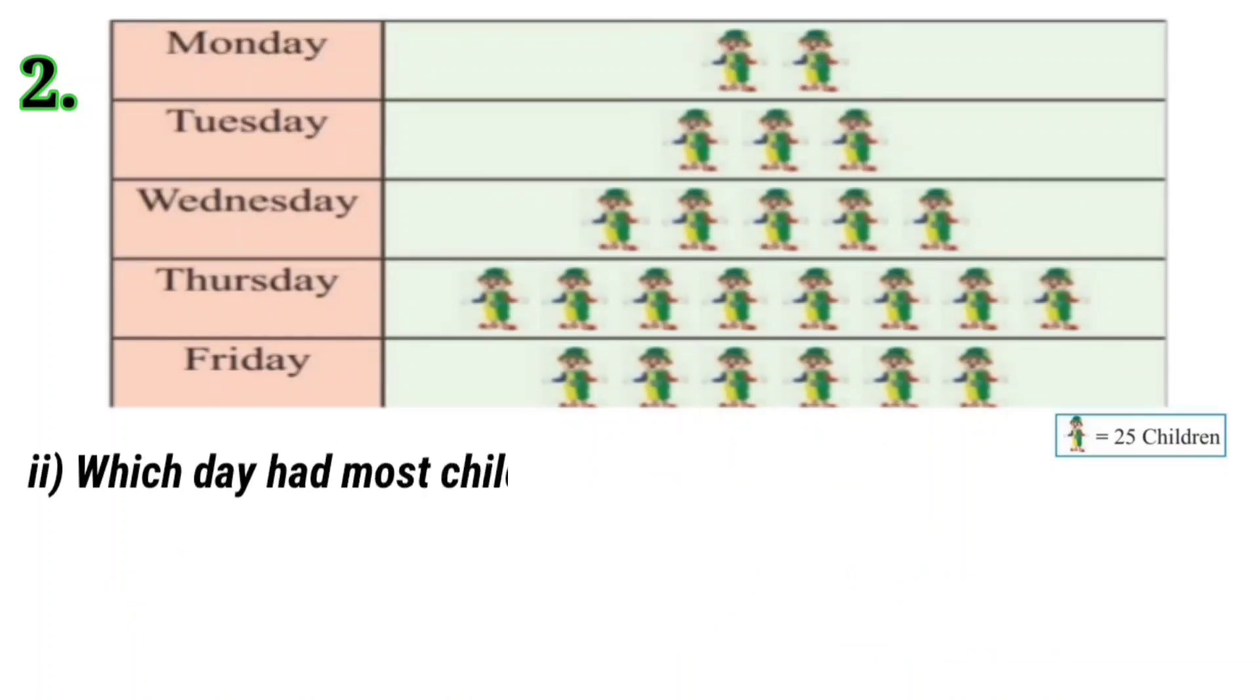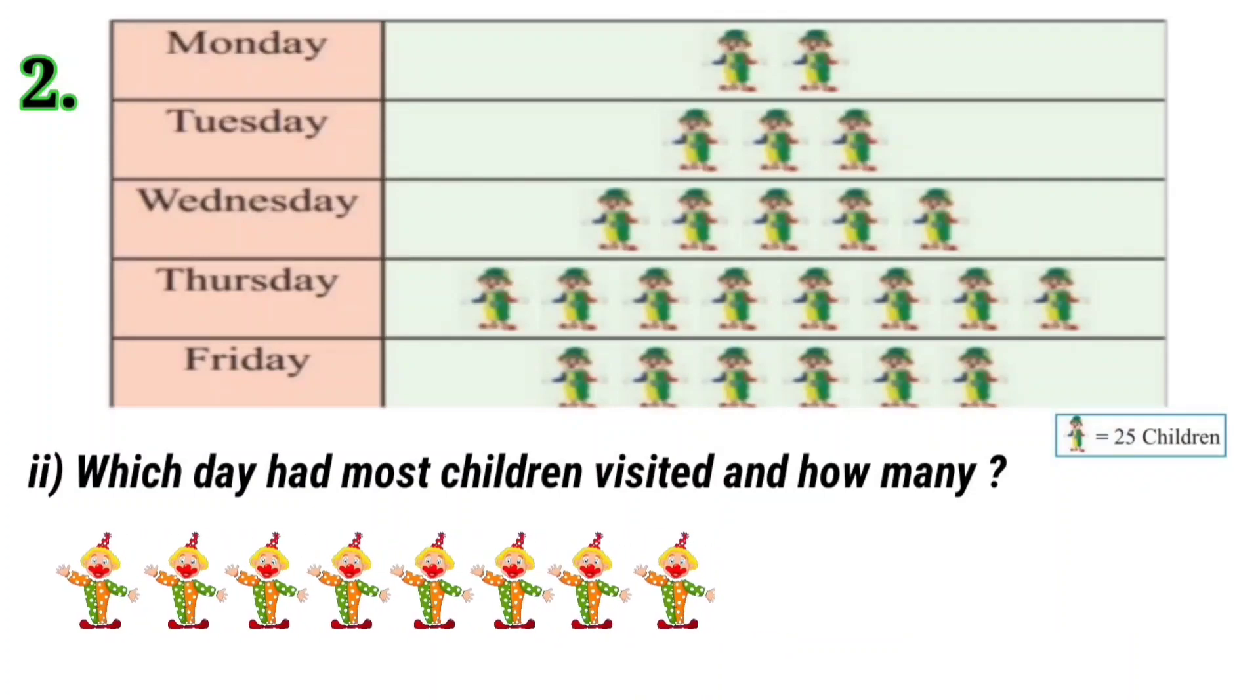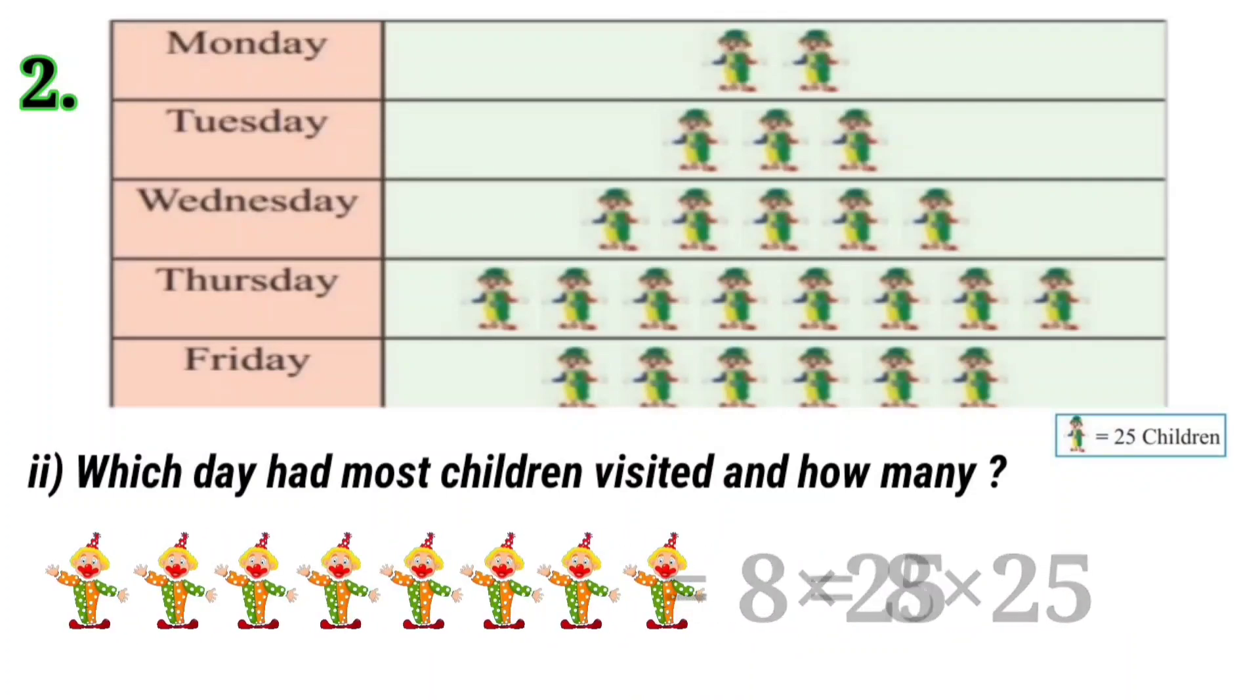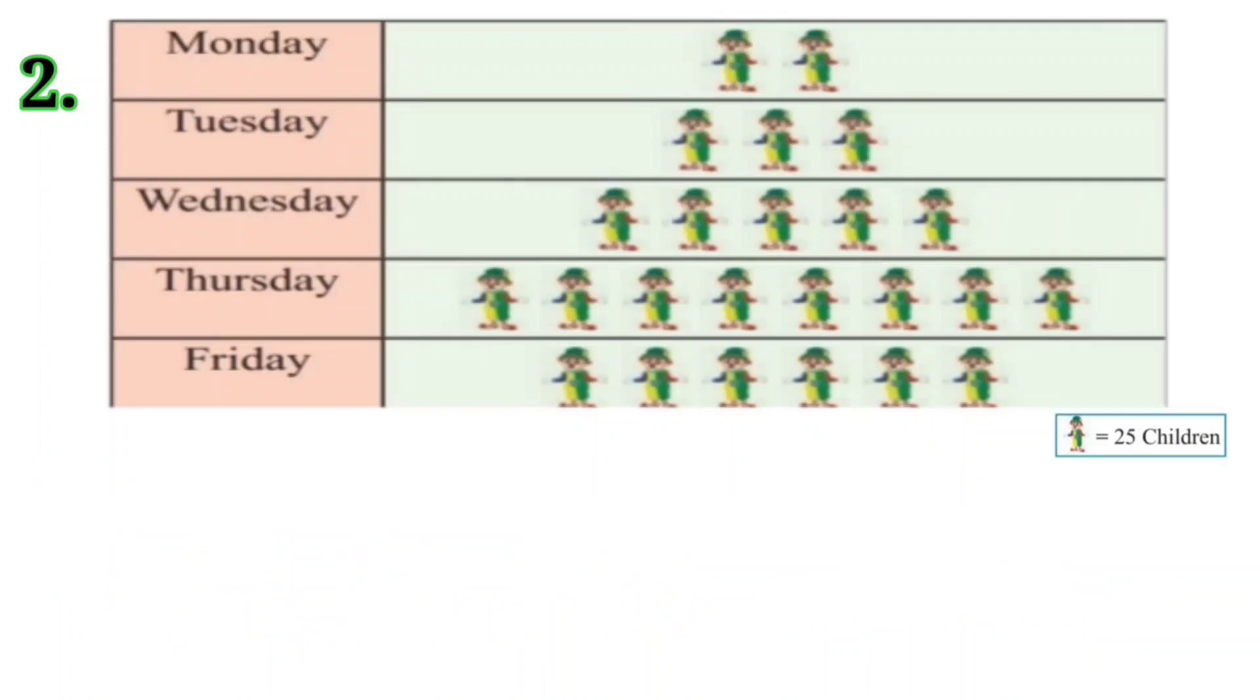Next question is, which day had most children and how many? It is clear from the picture graph that on Thursday, maximum children visited circus. Here, 8 symbols means 8 into 25 that is 200. Therefore, on Thursday, 200 children visited the circus.